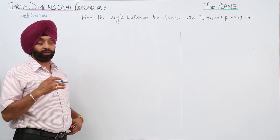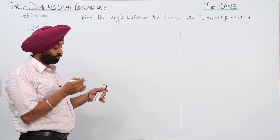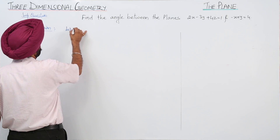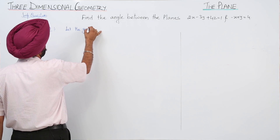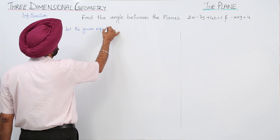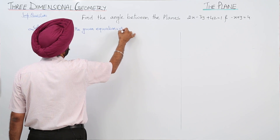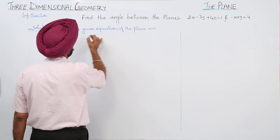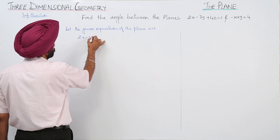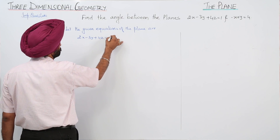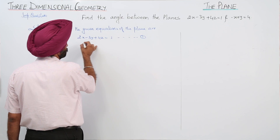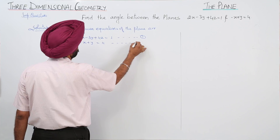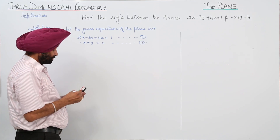We have to find the angle between the planes when the equations are in the Cartesian form. Let the given equations of the planes be: 2x minus 3y plus 4z equals 1 (equation 1), and minus x plus y equals 4 (equation 2).